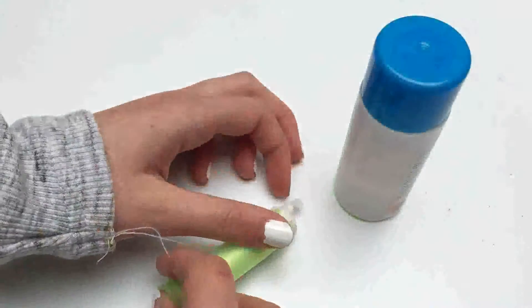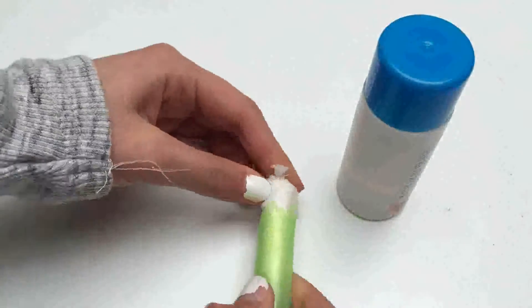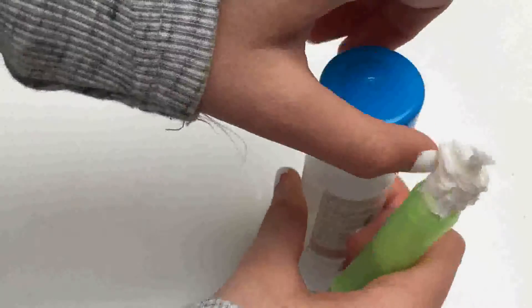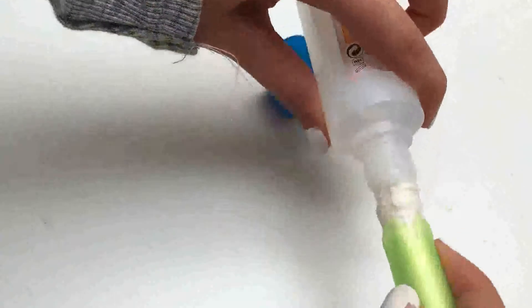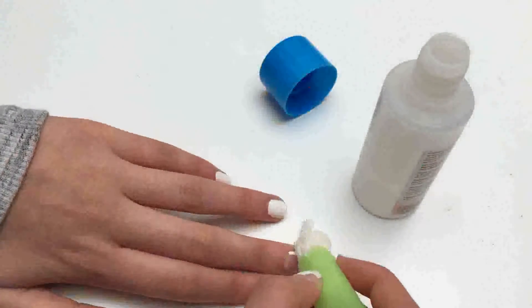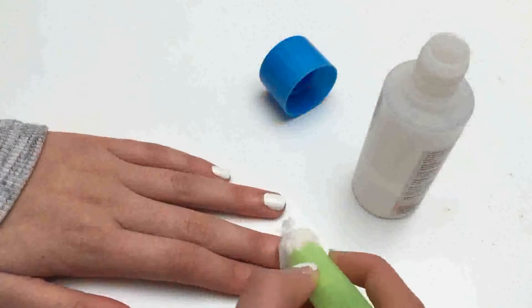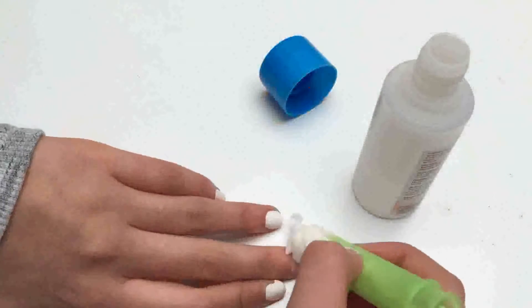Okay, for this life hack you can use a tampon because it's made of cotton for taking off your nail polish without getting the nail polish on your other hands.